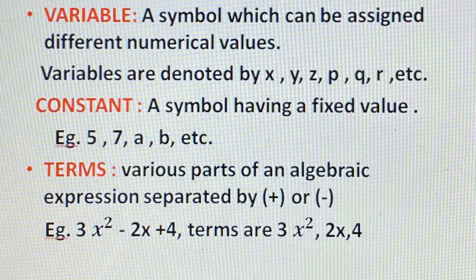Now, terms. Terms are the various parts of an algebraic expression which are separated by a plus or minus sign. For example, 3x² − 2x + 4 has three terms: 3x², 2x, and 4. So students, now you understand what is an algebraic expression, what is a constant, what is a variable, what is a coefficient, and what are terms.